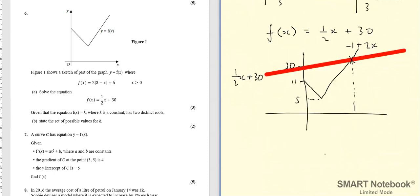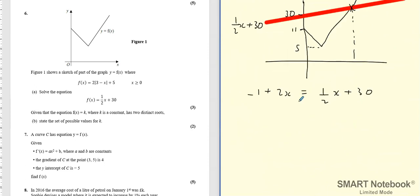So all we need to do now is say well minus 1 plus 2x is equal to a half x plus 30 and then solve this equation. So we get 3 over 2x equals 31, x equals 62 over 3.